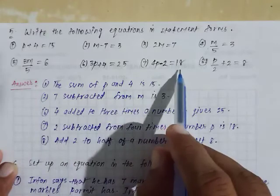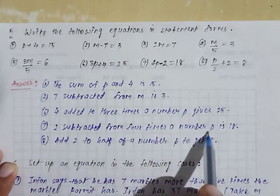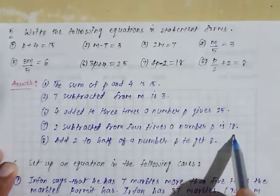Second, 4p minus 2 is equal to 18. We can write: 2 subtracted from 4 times a number p, it gives 18.